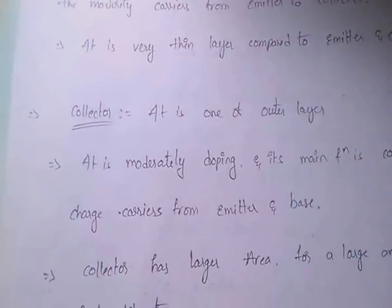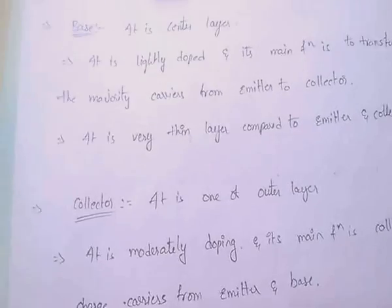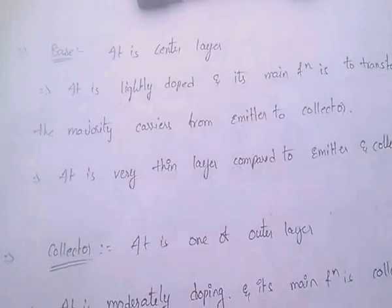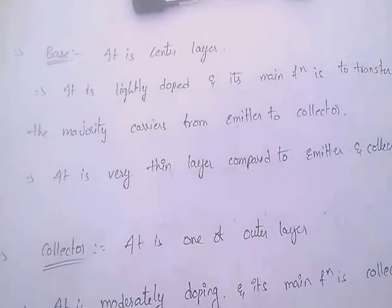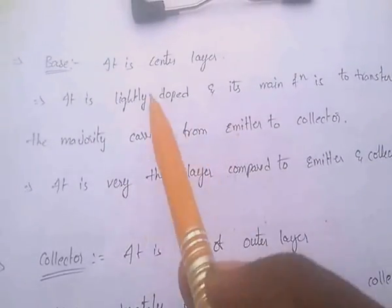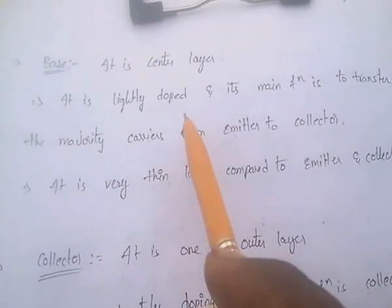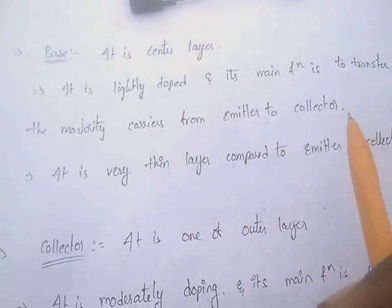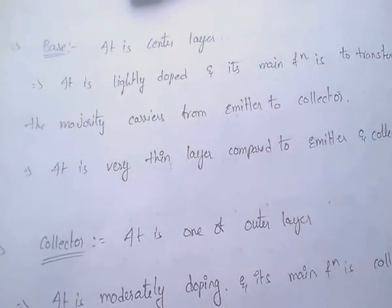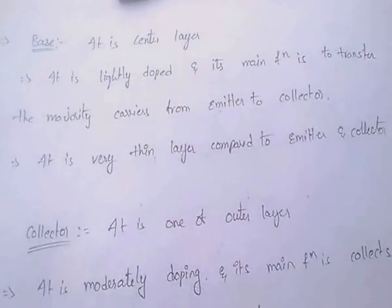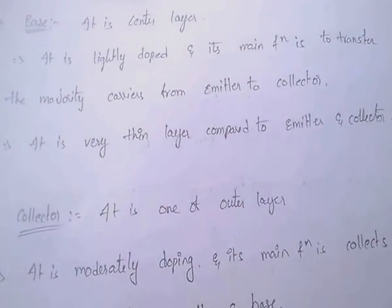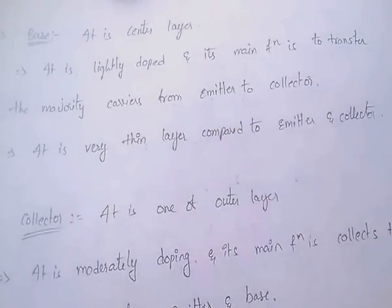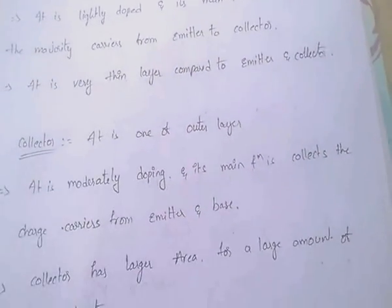The next terminal is the base. It is the center layer and is lightly doped. Its function is to transfer the majority carriers from emitter to collector. It is a very thin layer compared to the emitter and collector.